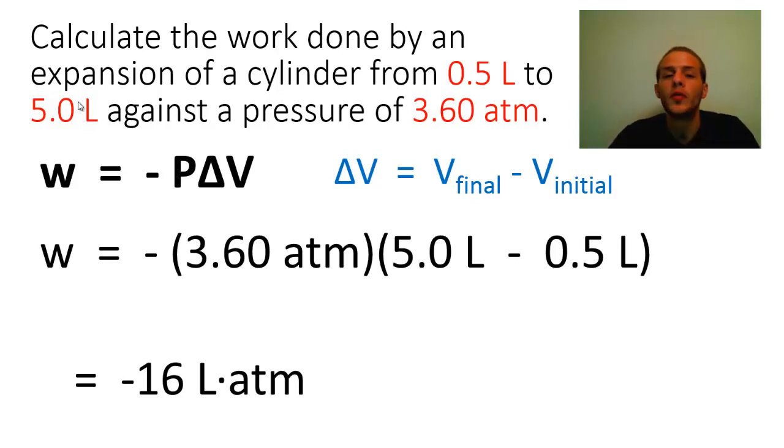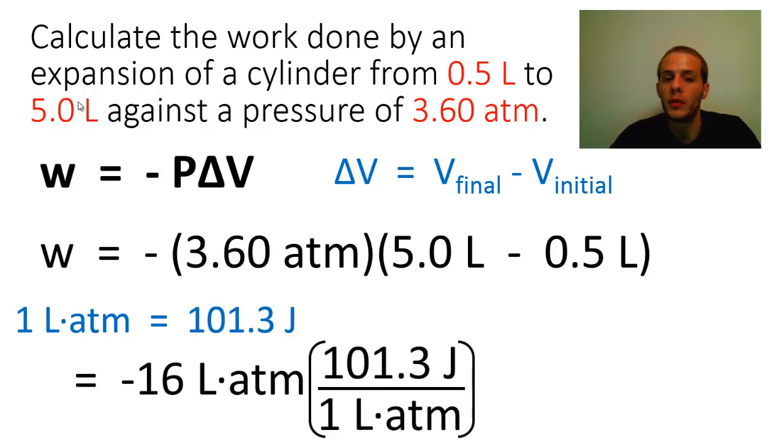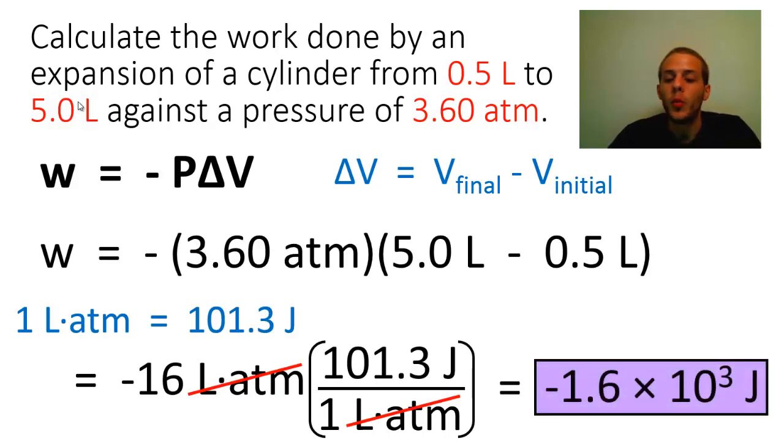So liters times atmospheres is kind of a funky unit for energy. So why don't we convert that into joules. So in your chemistry textbook there should be some reference tables somewhere in which you'll find the conversion between liters atmospheres and joules. And I've already dug it up for you. It turns out that one liter times atmospheres is going to be equal to 101.3 joules. So I'm simply going to set up a conversion factor in which I put the liters times atmospheres on the bottom and then the 101.3 joules on top. And this gives us 1.64 times 10³ joules.